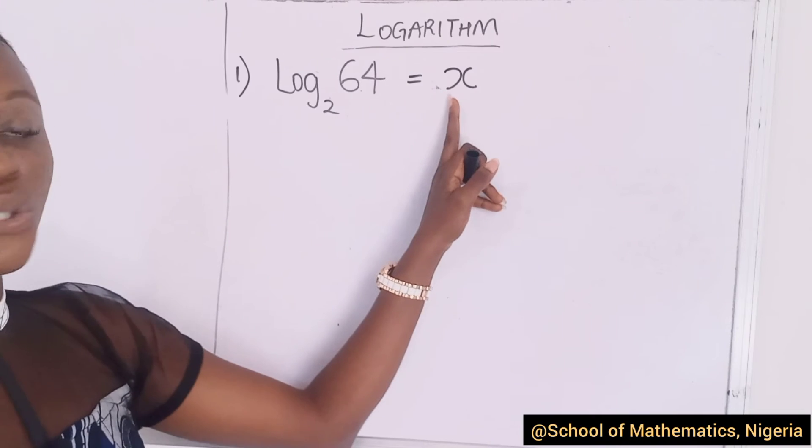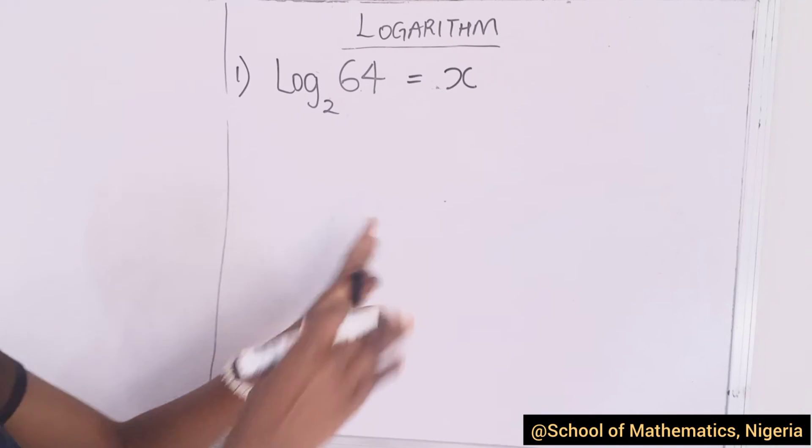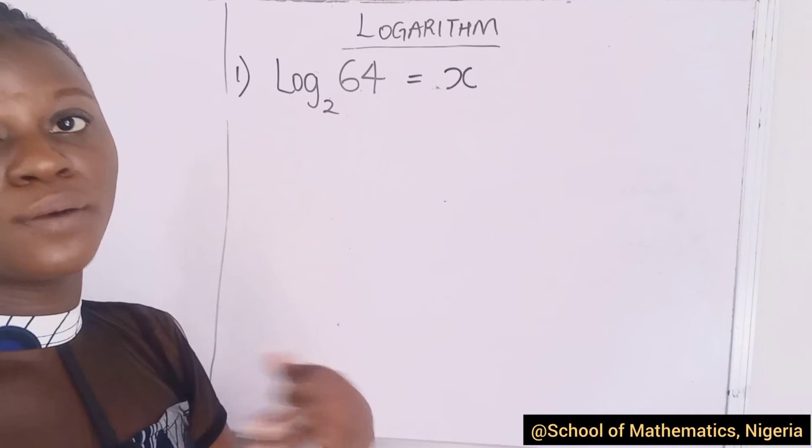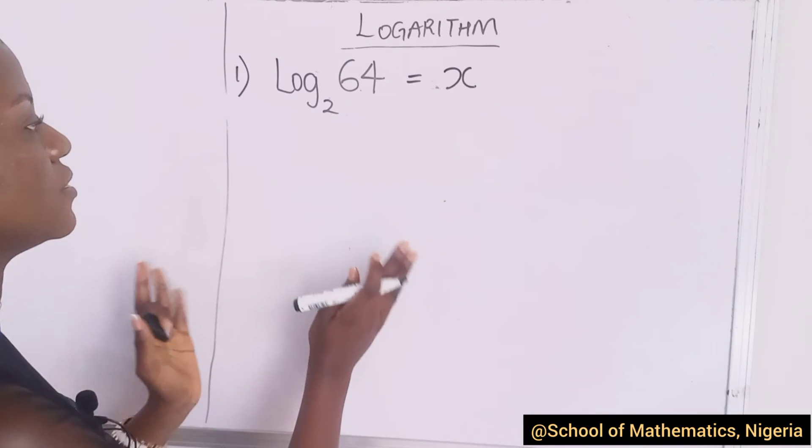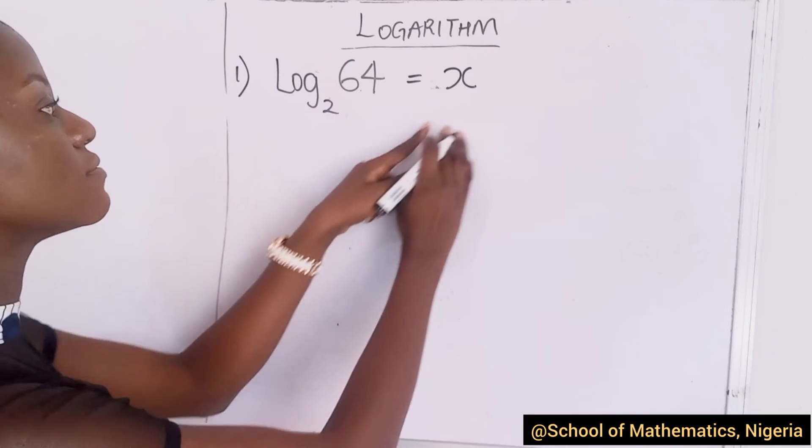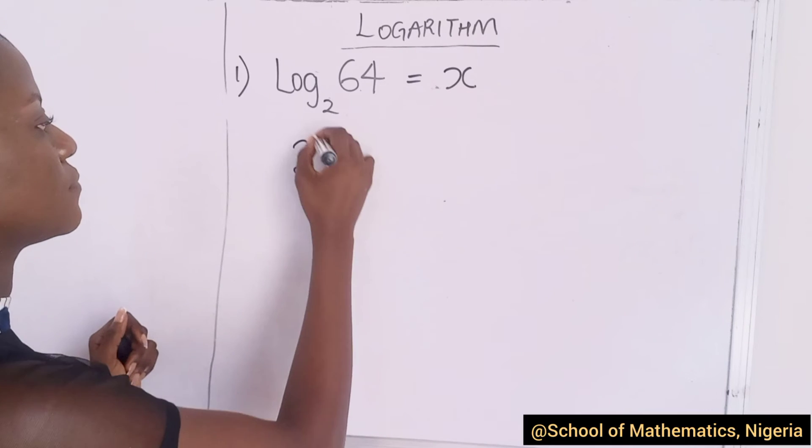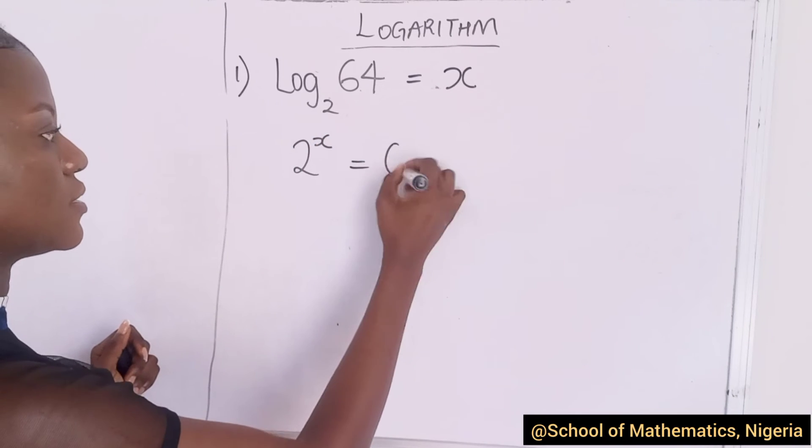Now, this is how you do it. Equate it to an unknown. We do not know our answer yet. Some of us do not know how many times we have to multiply 2 to get 64. So, you just equate it to an unknown. This is an unknown. It's represented with any letter. You can put Y, R, whatever it is.